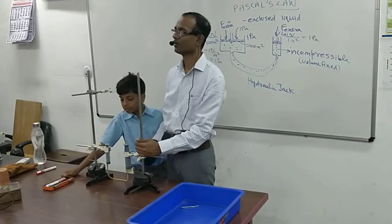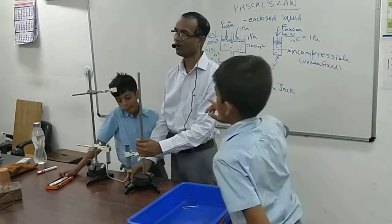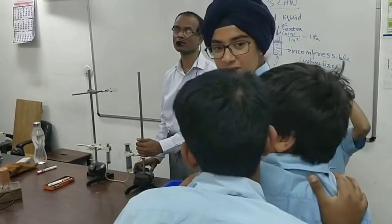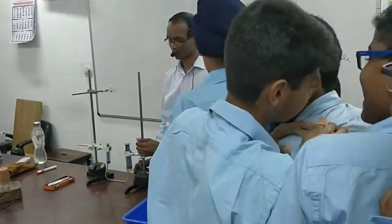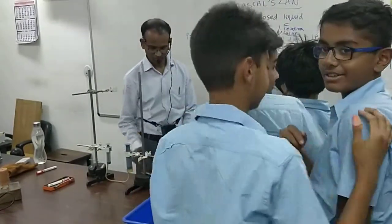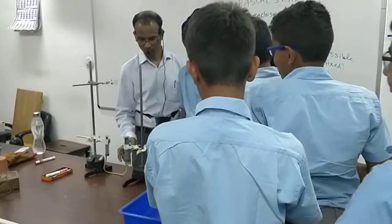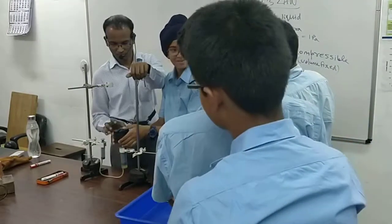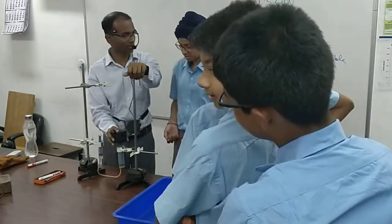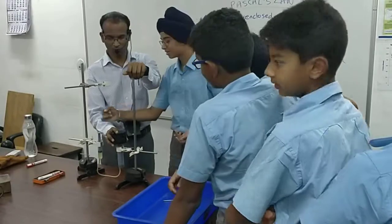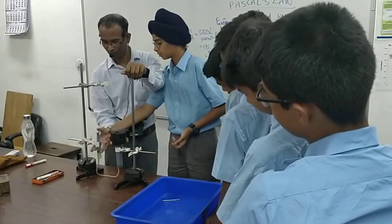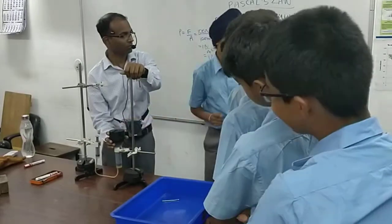Let us continue with more students trying. Each student first lifts the weight directly to feel how heavy it is, then places it on the piston and presses with two fingers. It seems very easy, right? Then they try lifting it directly again — it's much harder. The demonstration clearly shows the difference between lifting directly and using the hydraulic principle.